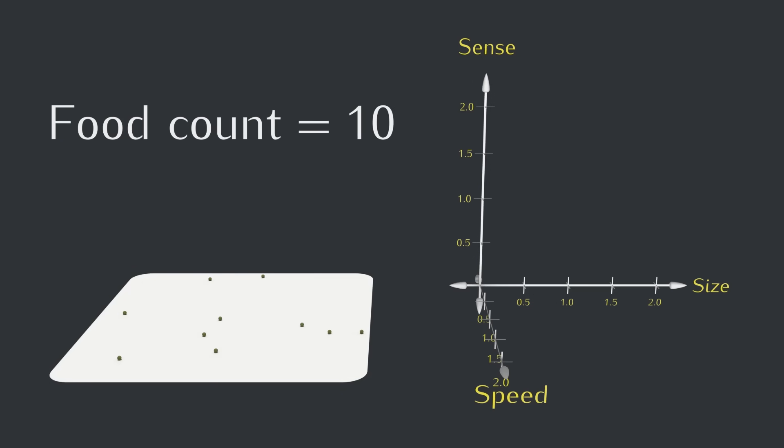Hmm. Okay, well apparently, the creatures that thrived with 100 food just aren't able to cut it with only 10. Even though there should be enough for say 5 to 10 creatures. So it looks like if it's going to be possible to survive with only 10 food, there's going to have to be some time for the population to adjust.